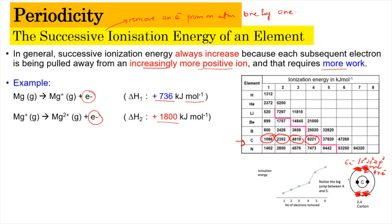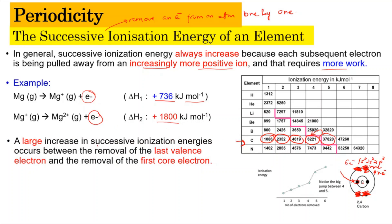Once the valence electrons are finished, the fifth electron comes from the inner shell, which is closer to the nucleus. Because it is closer to the nucleus, the force of attraction between the electron and the nucleus is much stronger, so more energy is needed. That is why there is a huge leap in energy — from around 6,000 to 37,000 kJ/mol — which is a very large increase.